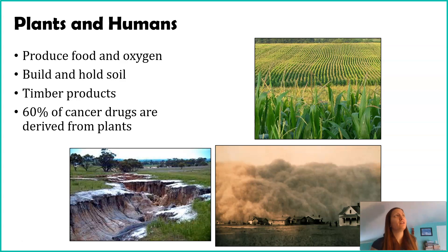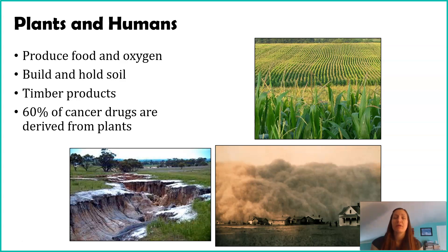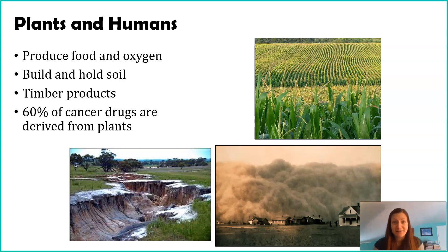Another way humans use plants is medicine. About 60% of cancer drugs are actually derived from plants, which is pretty cool. Plants also help in other medicines — ginger is really great for nausea and stomach health, aloe is great for burns, and aspirin was originally discovered in the willow tree, derived from the willow bark. There are lots of examples in the plant kingdom of medicines that humans have taken advantage of. We're really fortunate that we have a wide variety of plants impacting our diet, our health, and how we live — they pretty much control our lives to a major degree.